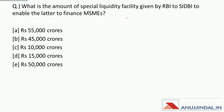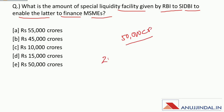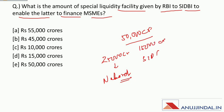What is the amount of special liquidity facility given by RBI to SIDBI to enable it to finance MSMEs? RBI gave a total of Rs. 50,000 crore to NABARD, SIDBI, and NHB — of which Rs. 25,000 crore to NABARD (whose newly appointed chairman is Chintala Govinda Rajulu), Rs. 15,000 crore to SIDBI, and Rs. 10,000 crore to National Housing Bank. The correct answer for SIDBI's allocation is Rs. 15,000 crore.